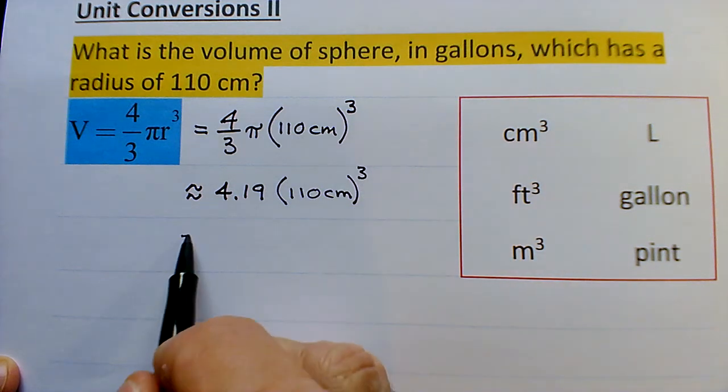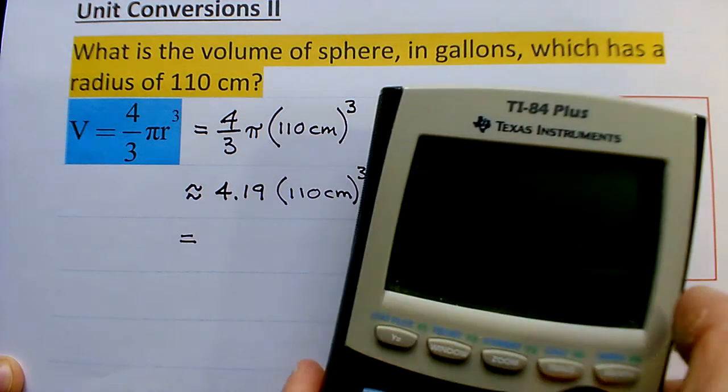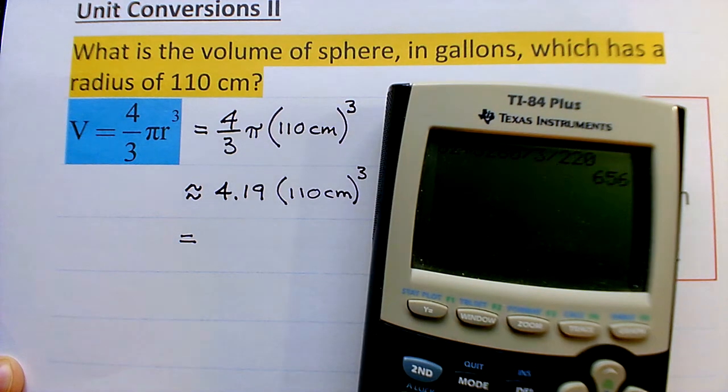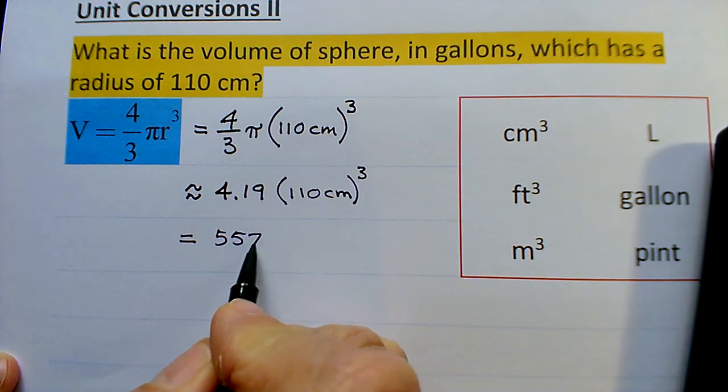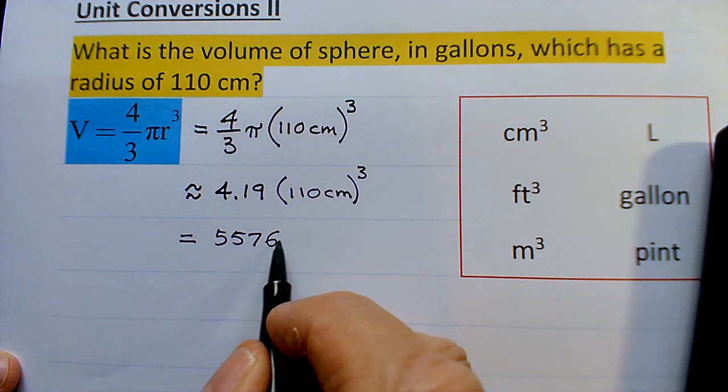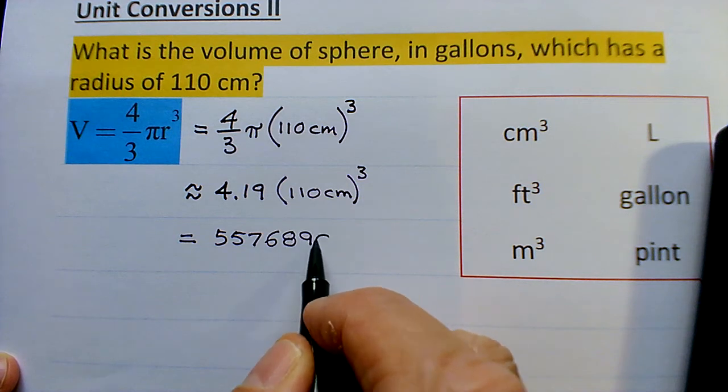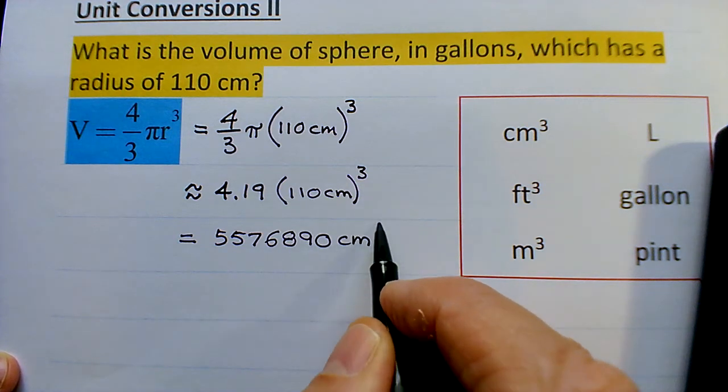And so to key it in, I'm going to do 4.19 times 110 raised to the third power. And that's going to give me 5,576,890 cubic centimeters.